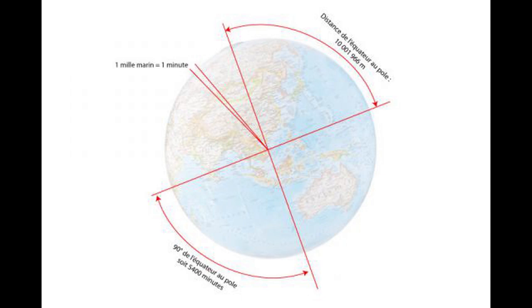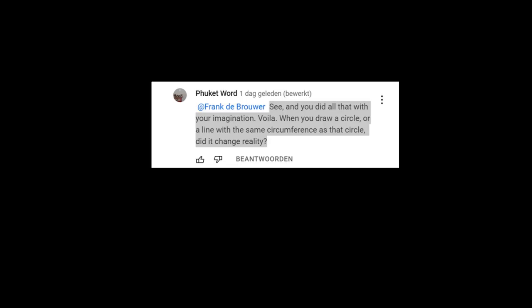This wiggling in becomes important later on. When he states: See, and you did all that with your imagination. Voila! When you draw a circle or a line with the same circumference as that circle, did it change reality?